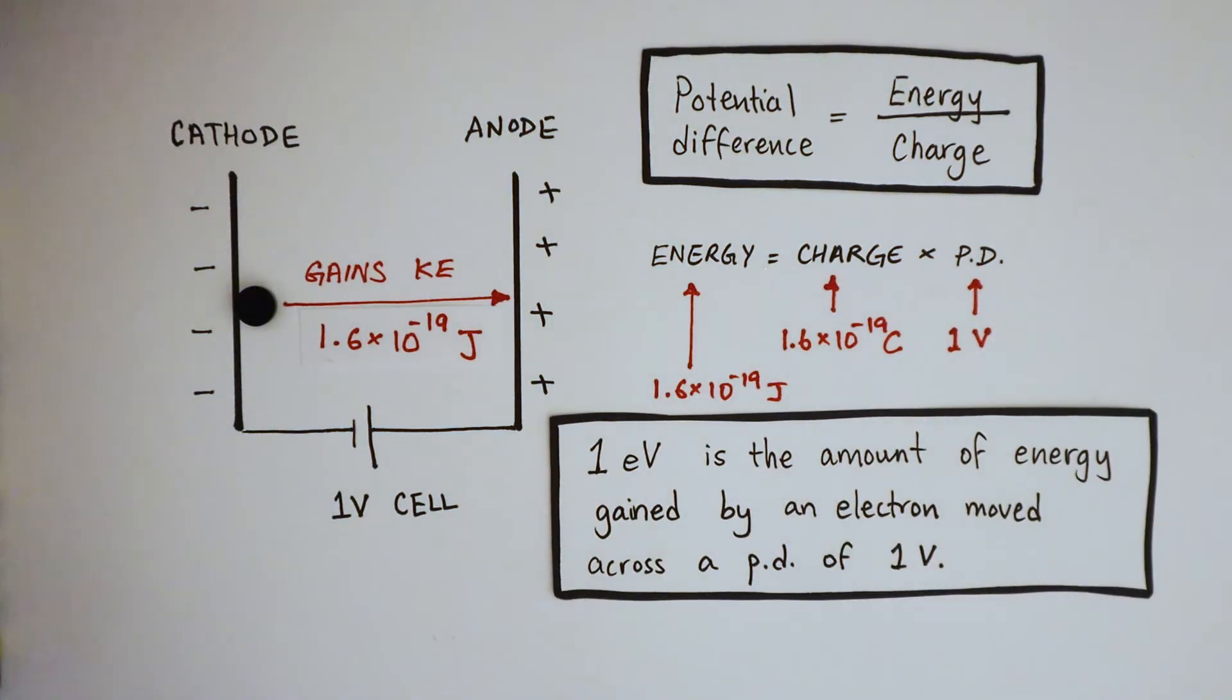By definition, 1 electron-volt is the amount of energy gained by an electron when it moves across a potential difference of 1 volt. And that's how we got this conversion here.